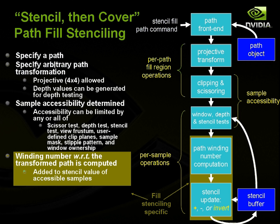Here's a pipeline diagram showing how this all fits together. We specify a path object, issue the stencil fill command, perform a projective transformation, clip and scissor with standard clip planes, then do window ownership, depth test, and stencil test for sample accessibility. For every pixel in the frame buffer that's accessible, we compute the winding number of the path with respect to that pixel, then update the stencil buffer by either incrementing, decrementing — these are modulo operations — or inverting bits. Notice the only thing being updated here is the stencil buffer.